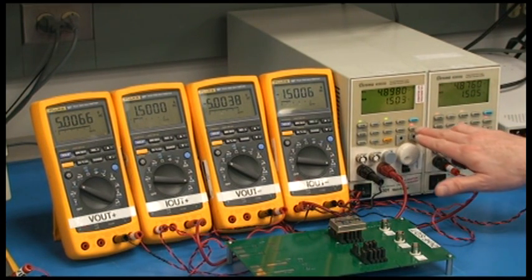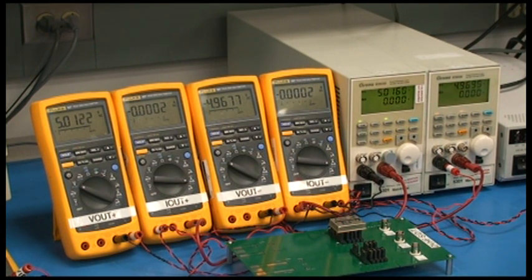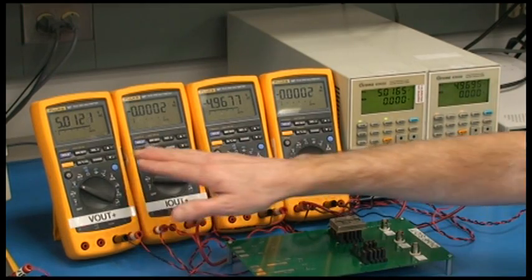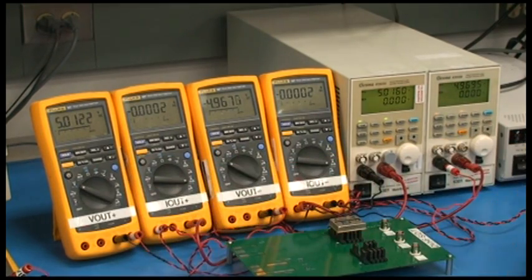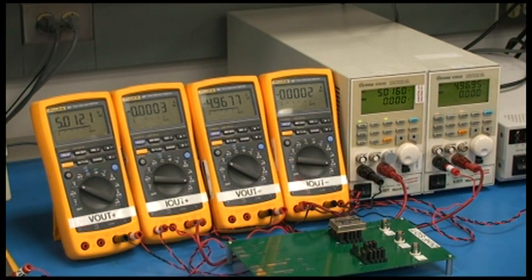We can now switch to a no load but still balanced load condition. So zero load on both outputs. You can see the positive output is still 5.0 volts. The negative output is negative 4.96 volts. So as long as the load is balanced, both outputs are very tightly regulated.